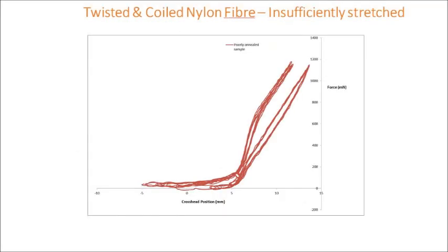Here's an example of a twisted and coiled polymer fiber that shows an unusual force extension curve. As shown in the left hand curves, the slope of the curve changes quite significantly. This is due to the fact that during contraction the turns in the coil impact on one another, creating residual compressive stress and increasing the apparent stiffness of the fiber. It's important to anneal the twisted and coiled fibers with stretch so that there's sufficient room between turns in the coil to allow contraction and to generate a more linear force extension curve.